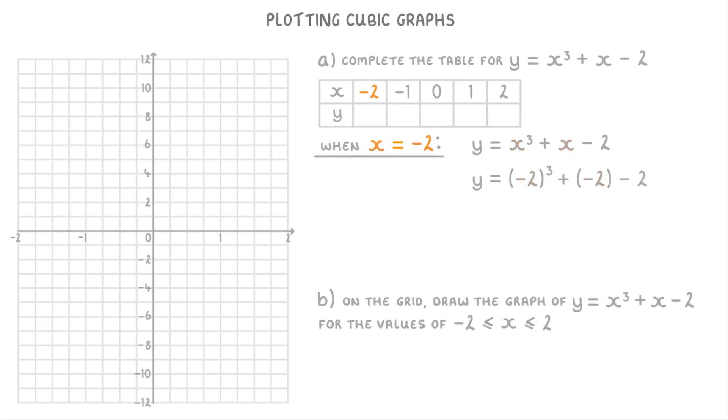This simplifies to minus 8 minus 2 minus 2, so minus 12 overall. Which means that when x is negative 2, y will be negative 12.